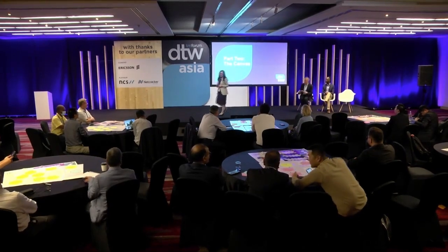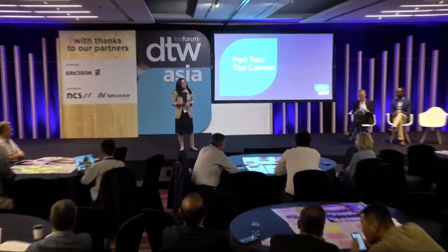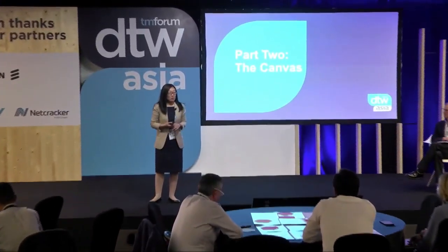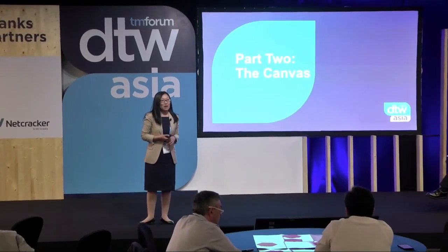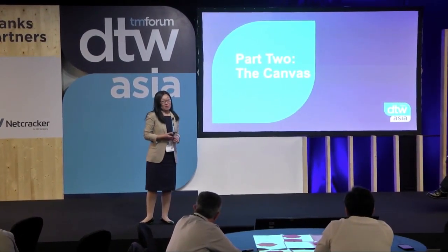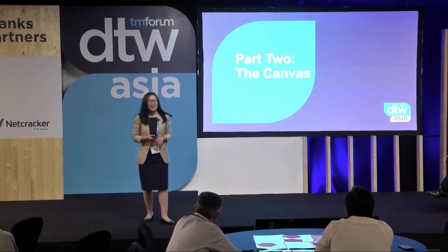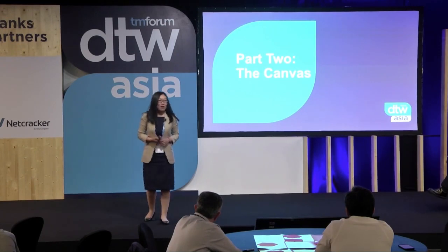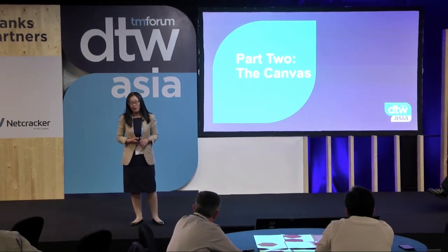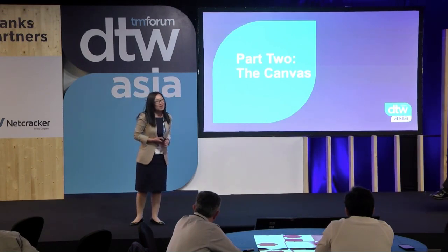Hello everyone. Now we go to part two after your excellent table exercise. Previously Emmanuel and Ian introduced our component specification. Our talented experts found some components missing and encouraged me to work even harder — I really appreciate that. Now my part is about canvas. Before that, I'd like to ask you a small question: can anyone give me an example of what kind of canvas it is?